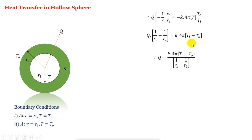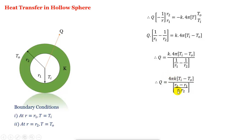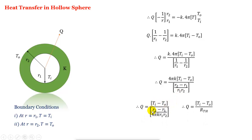Moving 4πK to the denominator, the equation becomes Q equal to (Ti minus To) / [(R2 minus R1) / (4πK·R1·R2)]. This looks like Q equal to (Ti minus To)/Rth, so the thermal resistance of the hollow sphere is Rth equal to (R2 minus R1) / (4πK·R1·R2).